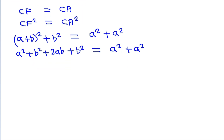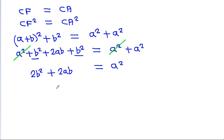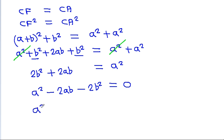Expanding, a² will cancel, and we get 2b² plus 2ab plus b² equals a², wait — simplifying gives a² minus 2ab minus 2b² equals 0.